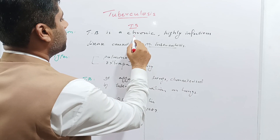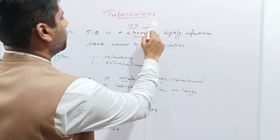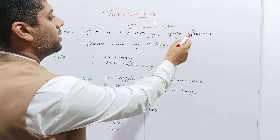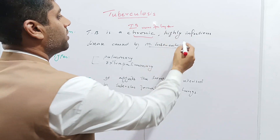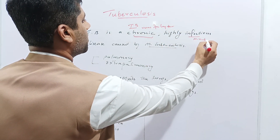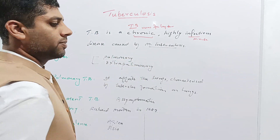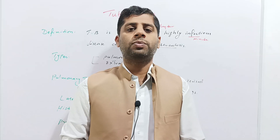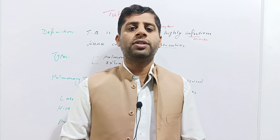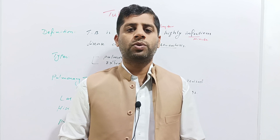TB or tuberculosis is a chronic disease — it runs for a long time. It is highly infectious, meaning it is caused by microorganisms, specifically Mycobacterium tuberculosis. So TB is a highly infectious and chronic bacterial disease caused by Mycobacterium tuberculosis.